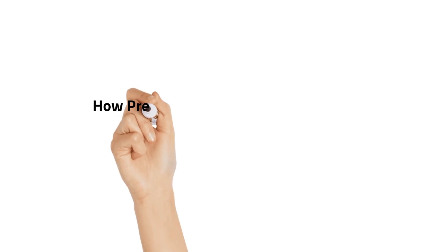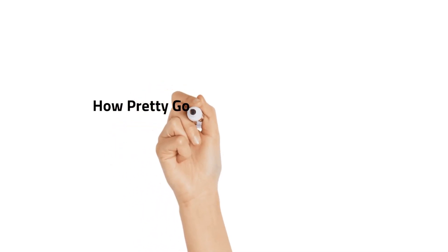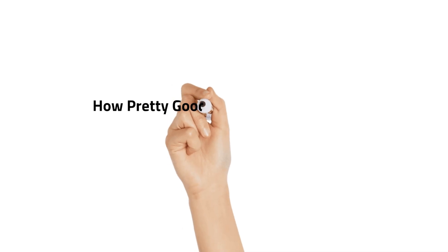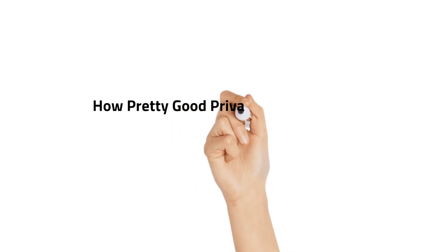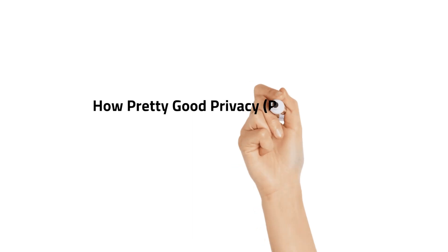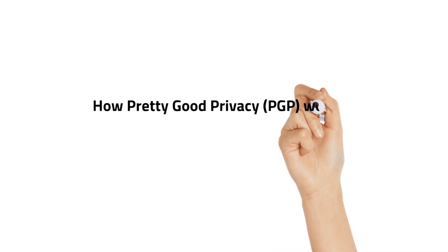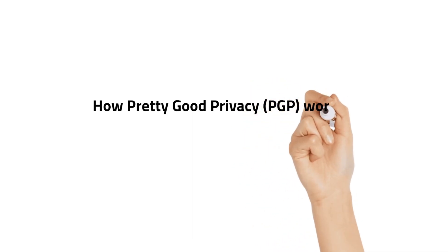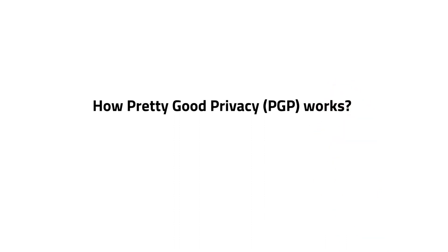Hello, in today's video I am going to explain how PGP works. PGP stands for Pretty Good Privacy. It is a computer program used for secure communication, file encryption and email encryption. Let's see how it works.